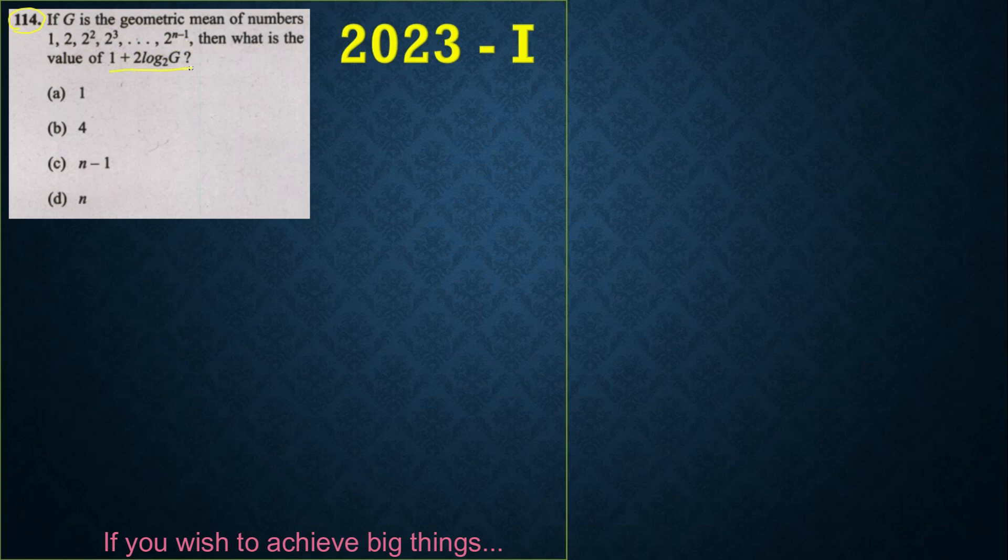So g is the geometric mean. Definitely there are two ways to solve this question. One is the traditional method which requires around two minutes, and the other is the shortcut method which is called substitution method, which will definitely give you the answer within one minute. So let's get started with the shortcut method.